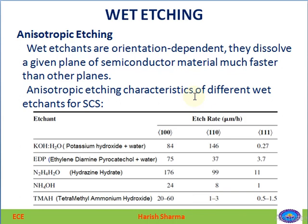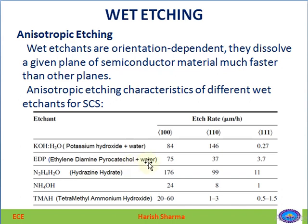Next is anisotropic etching. These wet etchants are orientation dependent — a given plane of semiconductor material dissolves much faster compared to other planes. Common anisotropic etching agents include KOH, which has the highest etch rate in the (110) plane, then the (100) plane, then the (111) plane. Similarly, EDP — ethylene diamine pyrocatechol plus water — has the highest etch rate in the (100) plane, then the (110) plane, then the (111) plane.